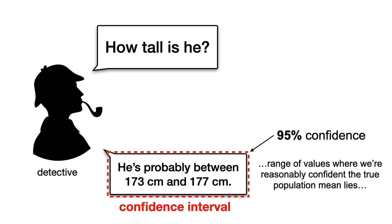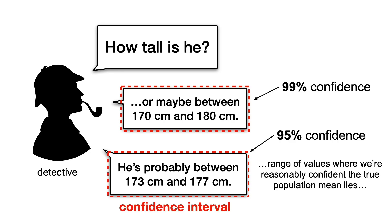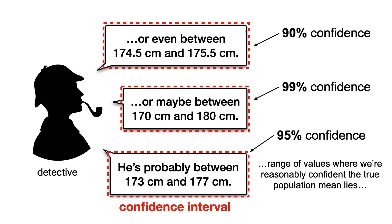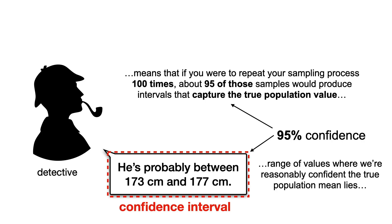Usually we talk about 95% confidence intervals, but you can also go for 90, 99%, or whatever you feel like. And remember that a 95% confidence level means that if you were to repeat your sampling process a hundred times, about 95 of those samples would produce intervals that capture the true population value.